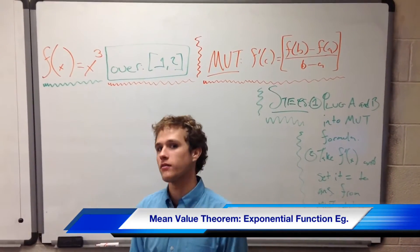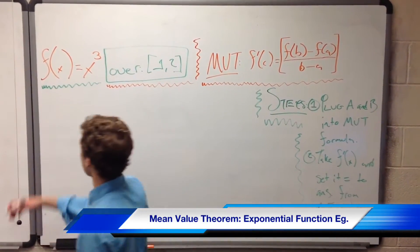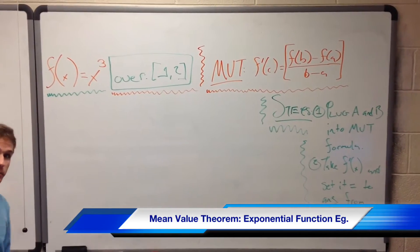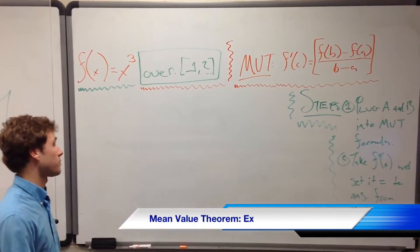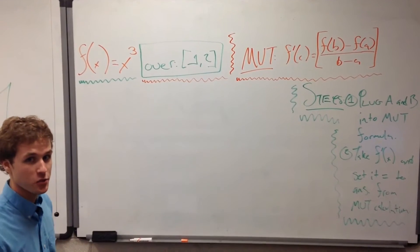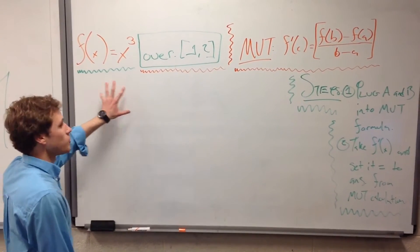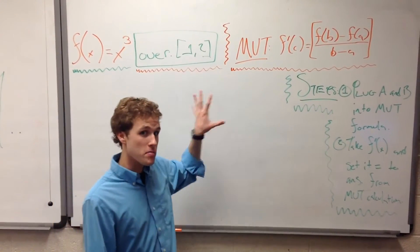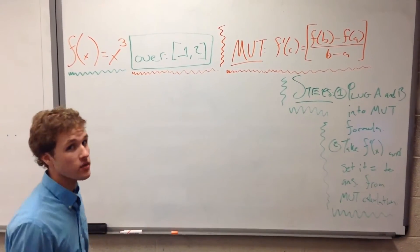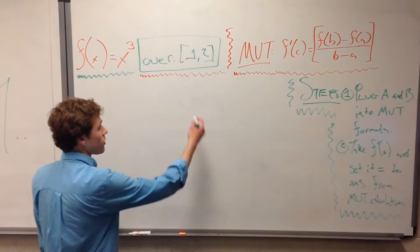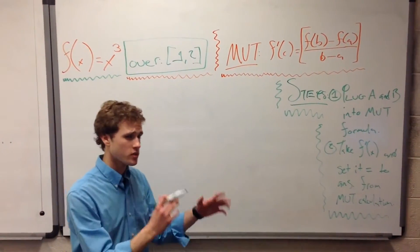Let's do an example of the mean value theorem as it applies to a very simple exponential function. This is about as simple as it can get, aside from x squared or x to the first. So we have f(x) = x³, and we want to use the mean value theorem to see what its mean value is over this interval [1, 2], so a pretty small interval.